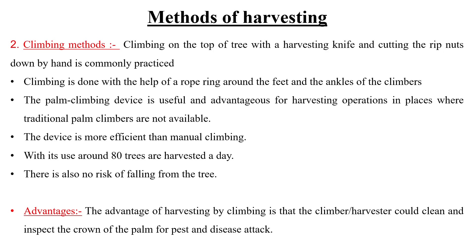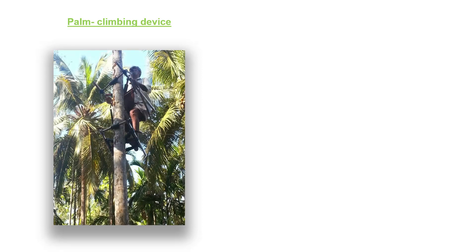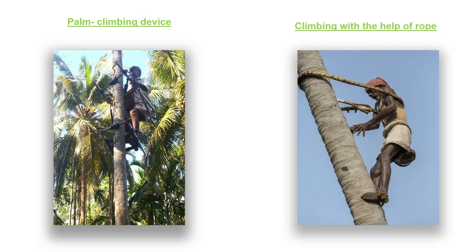Climbing methods are of two types, done either using a mechanical device or with the help of a rope. A person climbs the tree and harvests the coconut with a harvesting knife, cutting the ripe nuts. The advantage is that the climber or harvester can inspect the crown of the palm for pest or disease attacks, which prevents spoilage of the coconut. Climbing with a rope can be dangerous as there are chances of falling.